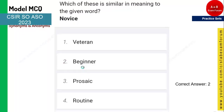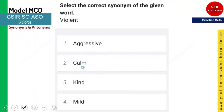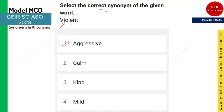The next word is 'violent' and you need to tell the correct synonym. A violent child is aggressive, so violent means aggressive. The opposite of violent would be calm, but since they are asking for the synonym, the answer is option one — aggressive.